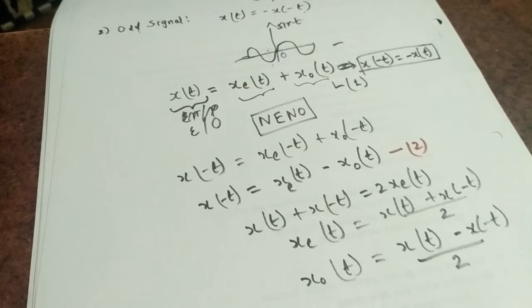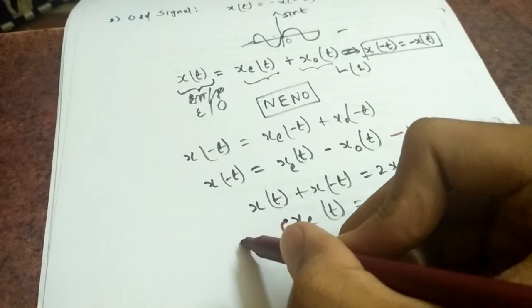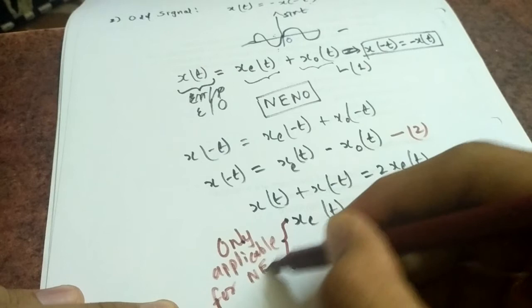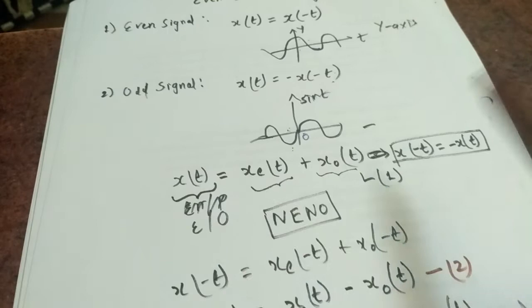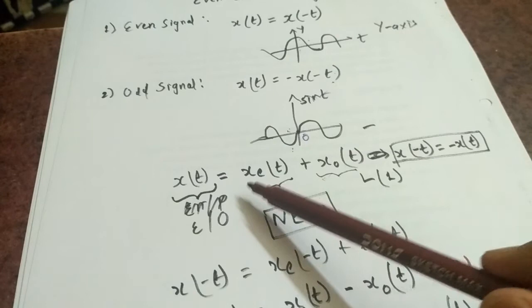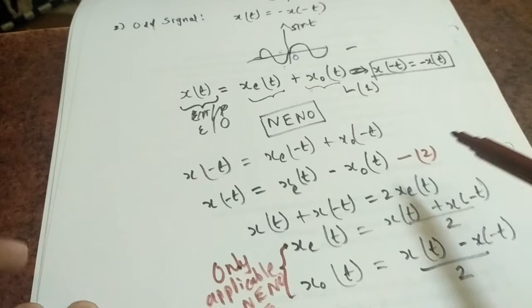These even and odd part formulas are applicable for 'nano' signals — neither even nor odd. If any signal is already even, it has no odd part, so x_even(t) equals x(t) itself, and similarly for odd signals. Any signal can be represented in this decomposed form.